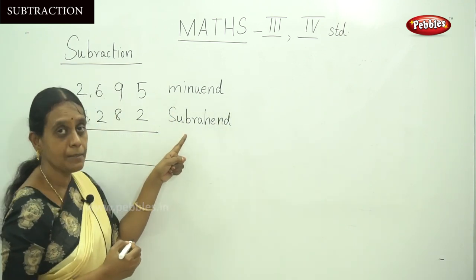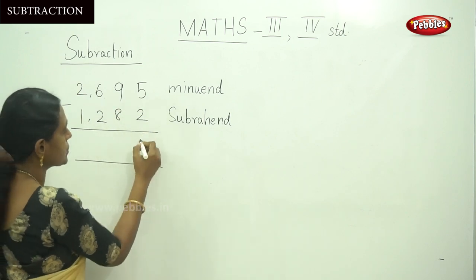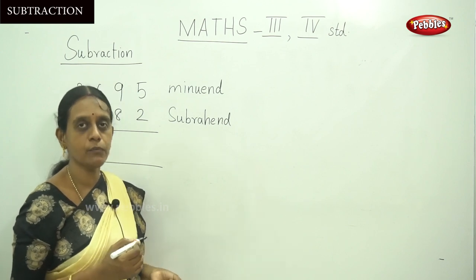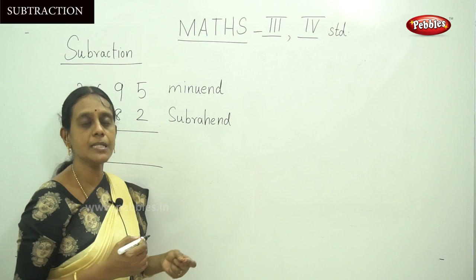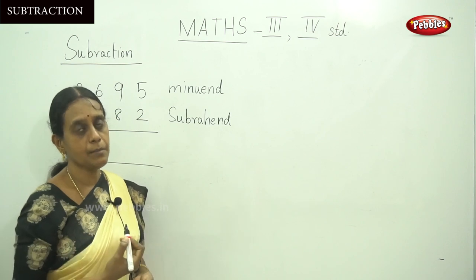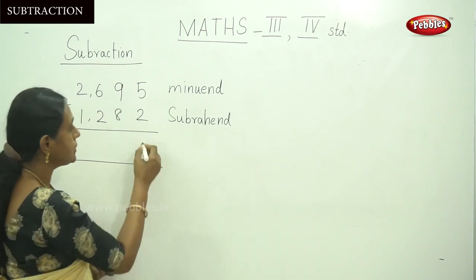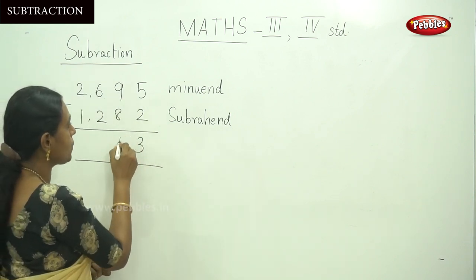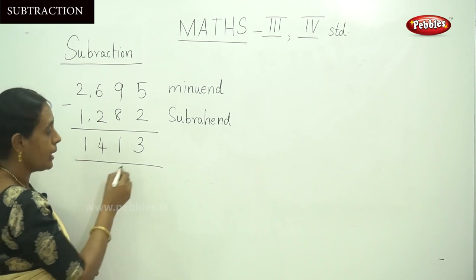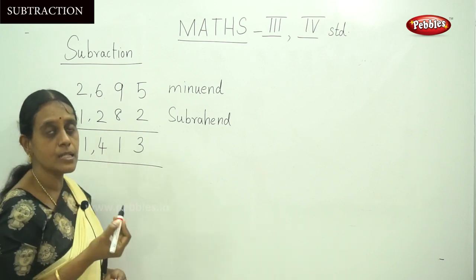So 2695 is called the minuend and 1282 is the subtrahend. The answer is called the difference. First, 5 minus 2: count back two before 5, that is 4, 3 — so the answer is 3. Then 9 minus 8 is 1, 6 minus 2 is 4, and 2 minus 1 is 1. Putting the comma, the answer is 1,413. This answer is called the difference.